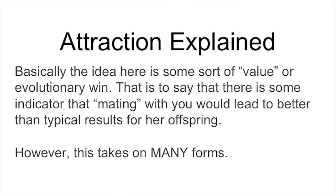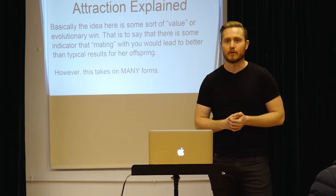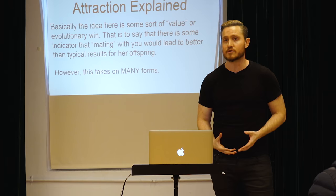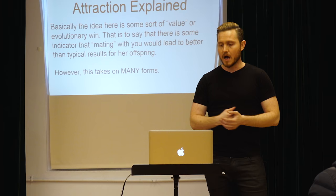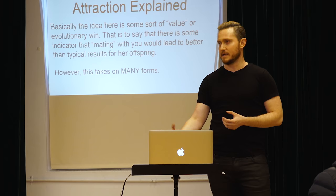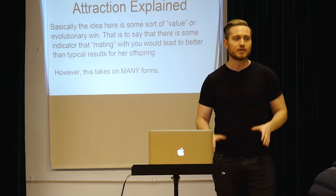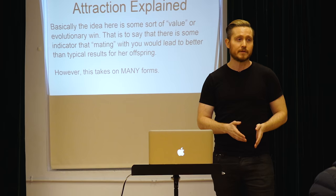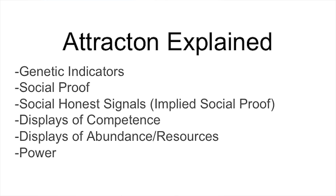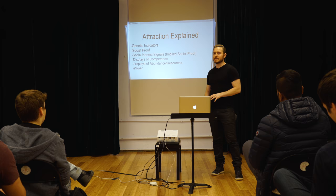Next is attraction. The idea is that in some evolutionary or value context, the girl is better off choosing your genetics over a random guy's. That can stem from looking physically big and strong, having good social feedback, seeming rich and powerful and successful, or many other factors. The key point: it should be a win for her. If she's winning by sleeping with you, she probably will; if she's losing, she probably won't. This includes genetic indicators, social proof, and honest signals.